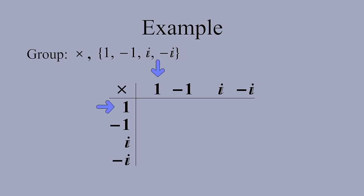One is the identity element under multiplication, so any number multiplied by one is unchanged. This allows us to quickly fill in the first row and first column. We can now multiply and fill in the rest of the table. Negative 1 times negative 1 is 1, negative 1 times i is negative i, negative 1 times negative i is i, and so on.